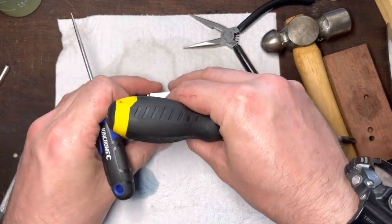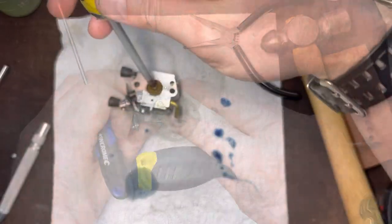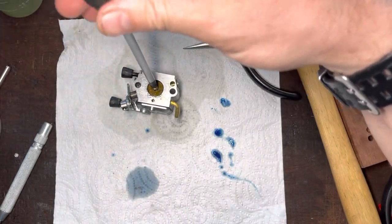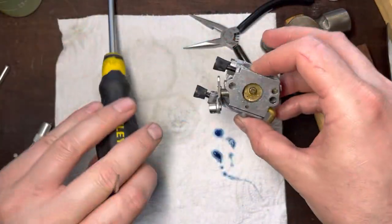So pop the brass screw in. Make sure everything's aligned nicely. Gently, gently. It's only brass. Brass into brass. The lock type will do its job.